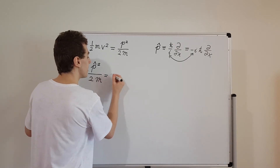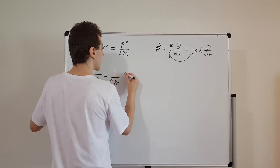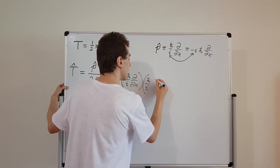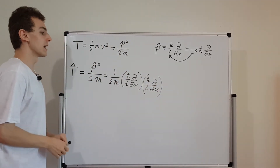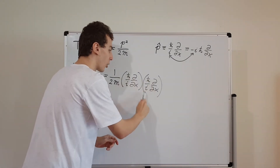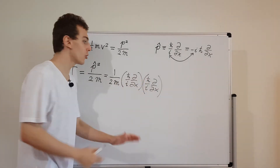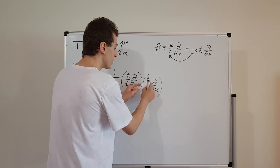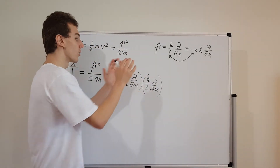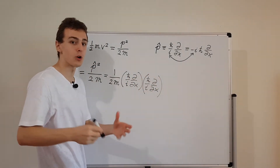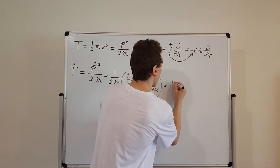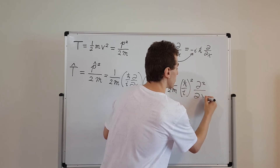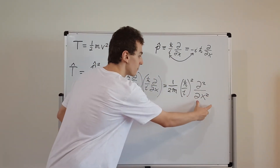Writing that out in full: we have 1 over 2m as the constant out front, then we apply the momentum operator once — that's ℏ over i times ∂/∂x — and then we apply it again: ℏ over i times ∂/∂x. We can rearrange this because derivatives ignore constants. We can group the ℏ over i terms together as (ℏ/i)², and group the two derivatives into a second partial derivative with respect to x, giving us 1 over 2m times (ℏ/i)² times ∂²/∂x².